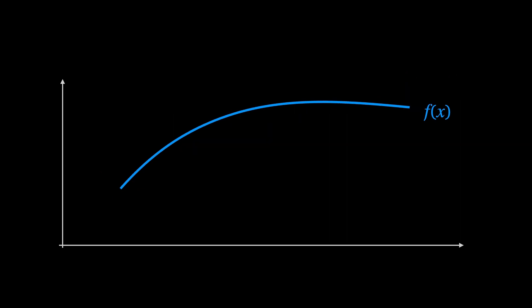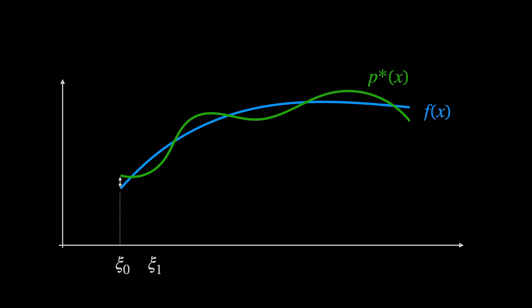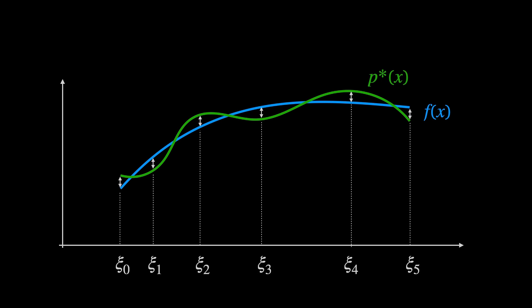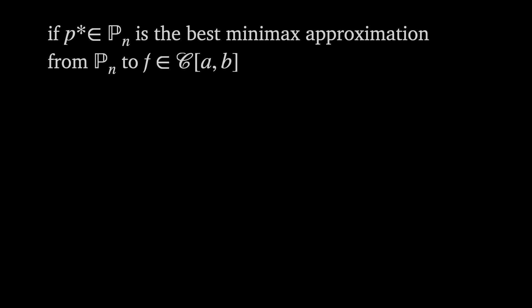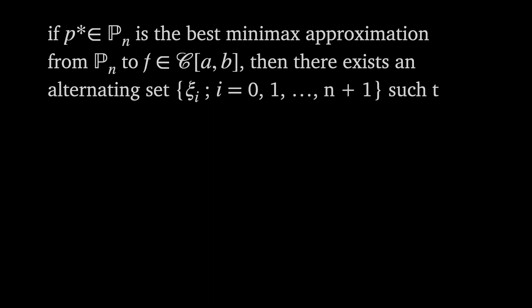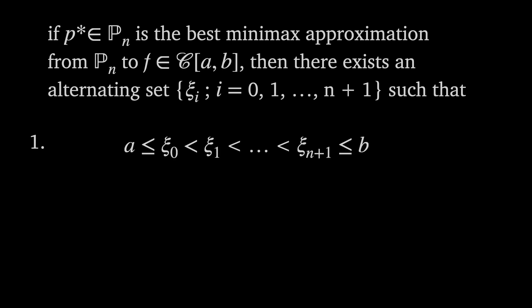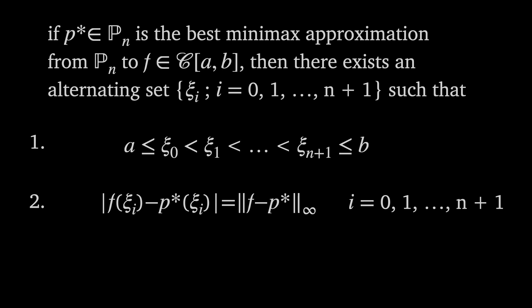If we increase the degree of the polynomial — in this case to a fourth-order polynomial — the same phenomenon occurs. The set of x-values ψ₀ to ψ₅ is called the alternating set, because of the alternating sign of the error function at these points. This can be summarized by the characterization theorem: if p* in Pₙ is the best minimax approximation from Pₙ to f, a continuous function on [a, b], then there exists an alternating set ξ₀ to ξₙ₊₁ within [a, b] where each point is strictly greater than the previous one, and at each ξᵢ the maximum of |e(x)| is achieved and equals the infinity norm.